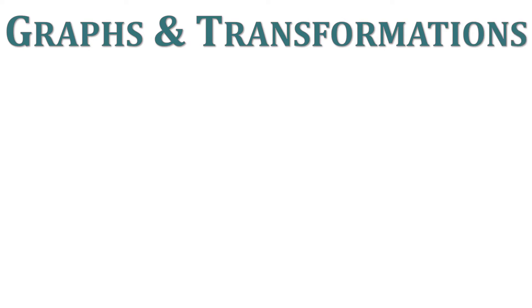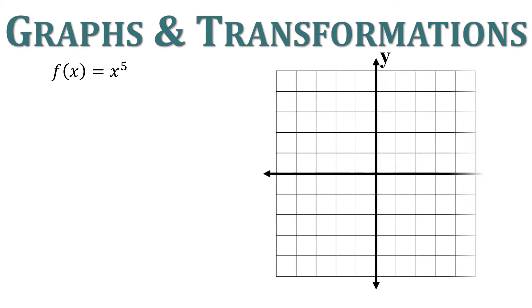Let's look at a polynomial: f of x equals x to the fifth. This function has a power of 5, hence a higher degree. Our end behaviors are going to be opposite because it's odd, but because our coefficient is 1 and it's positive, it's going to end going in the positive direction. So that's x to the fifth.